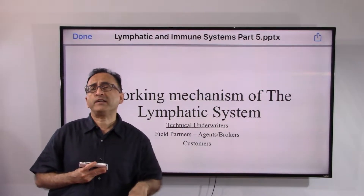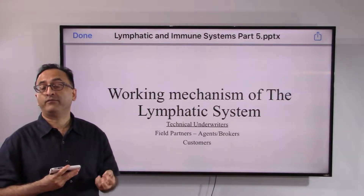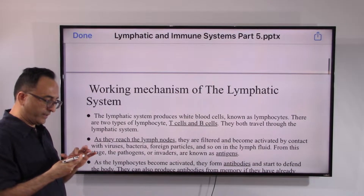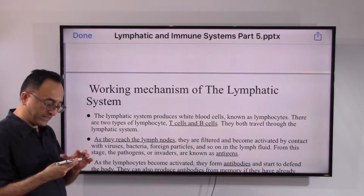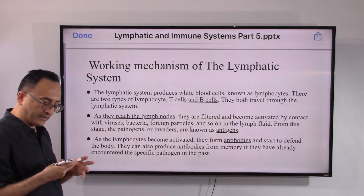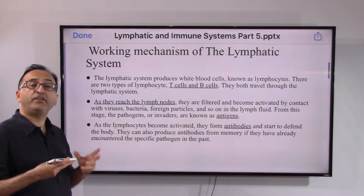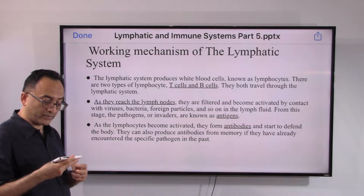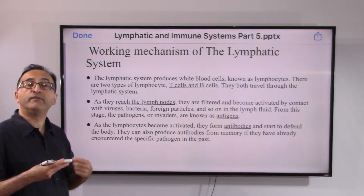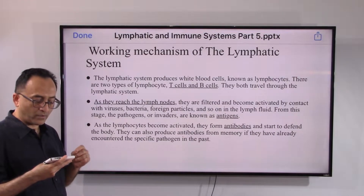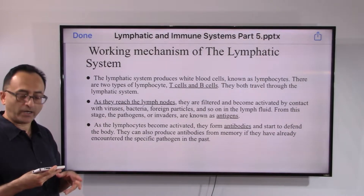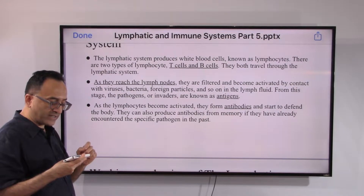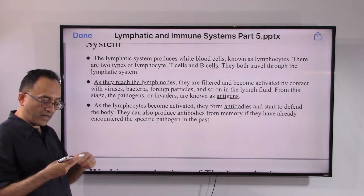Welcome back. Let's take a look at the working mechanism of the lymphatic system and what disorders it may lead to if things go wrong. The lymphatic system produces white blood cells known as lymphocytes — T cells and B cells. They travel through the lymphatic system and at the lymph nodes, they are filtered and activated by contact with viruses, bacteria, and foreign particles in the lymph fluid. The pathogens or invaders are known as antigens, and to fight them, antibodies are formed as the lymphocytes become activated.